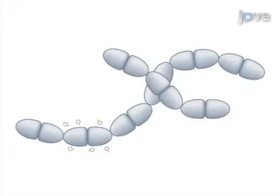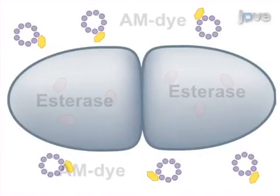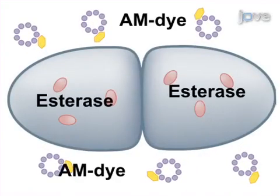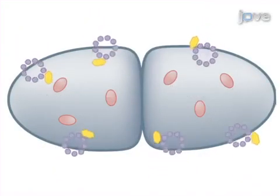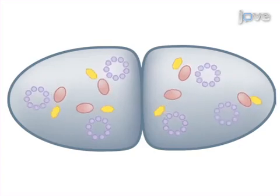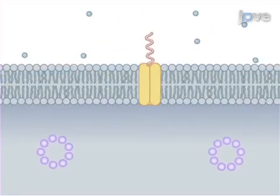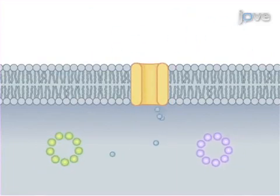This is achieved by first incubating bacteria during their growth phase with the fluorophore of interest until it has equilibrated across their membranes. Next, the bacteria are treated with the agent of choice and their fluorescence is monitored.